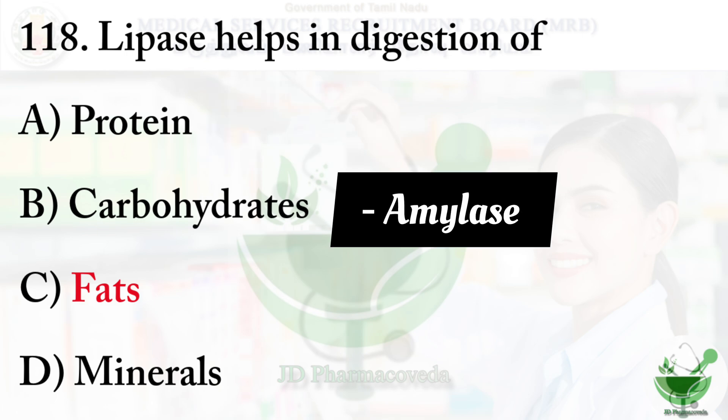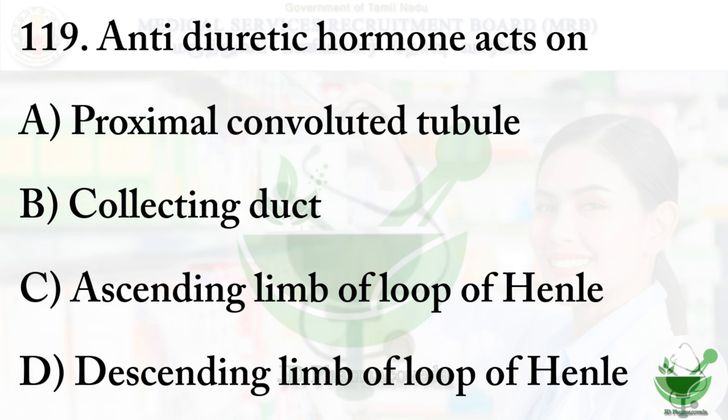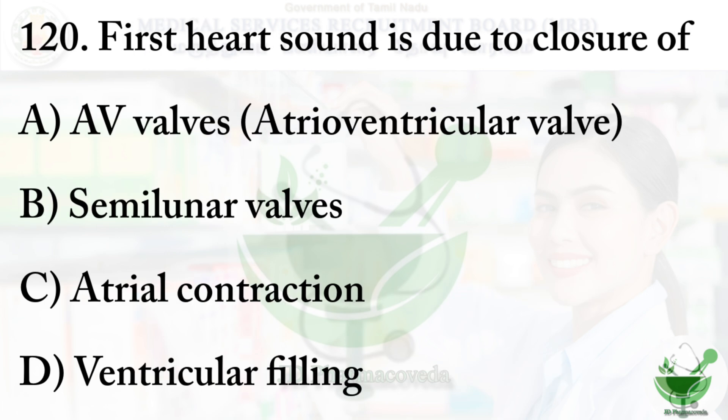Question 119: Anti-diuretic hormone acts on — Option A: proximal convoluted tubule, option B: collecting duct, option C: ascending limb of loop of Henle, option D: descending limb of loop of Henle. The right option is option B, collecting duct.